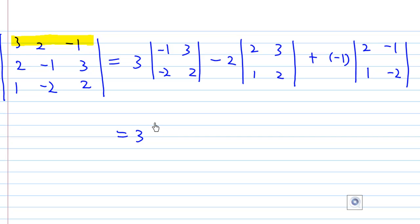Evaluating the 2×2 determinants, I get (-2 + 6), then -2(4 - 3), plus (-1)(-4 + 1).